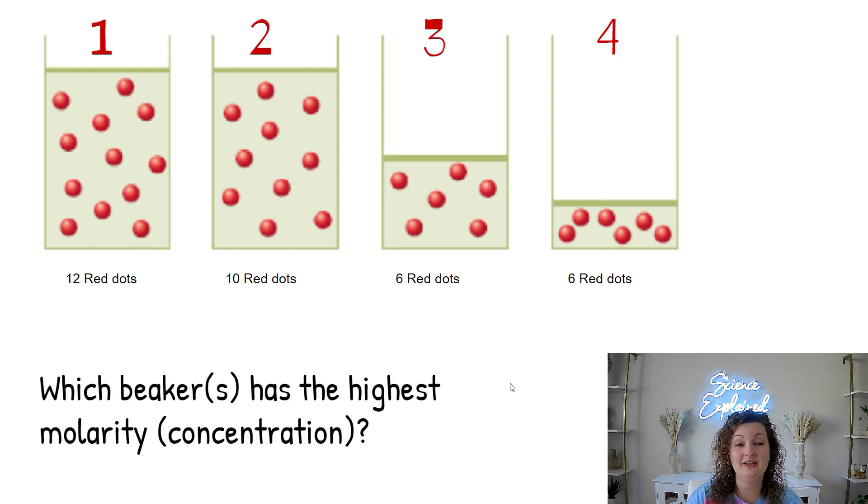Let's go over the answer. It's going to be four. The fourth one has six red dots standing for your solute, and the least amount of solvent. So this one is going to be highly concentrated compared to the rest, which are a little bit more diluted than this one.